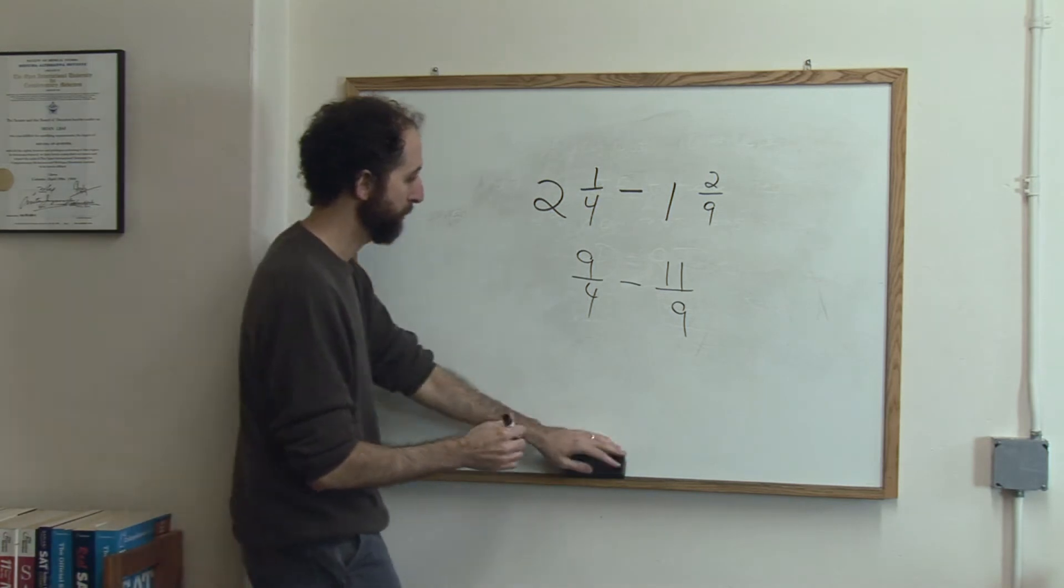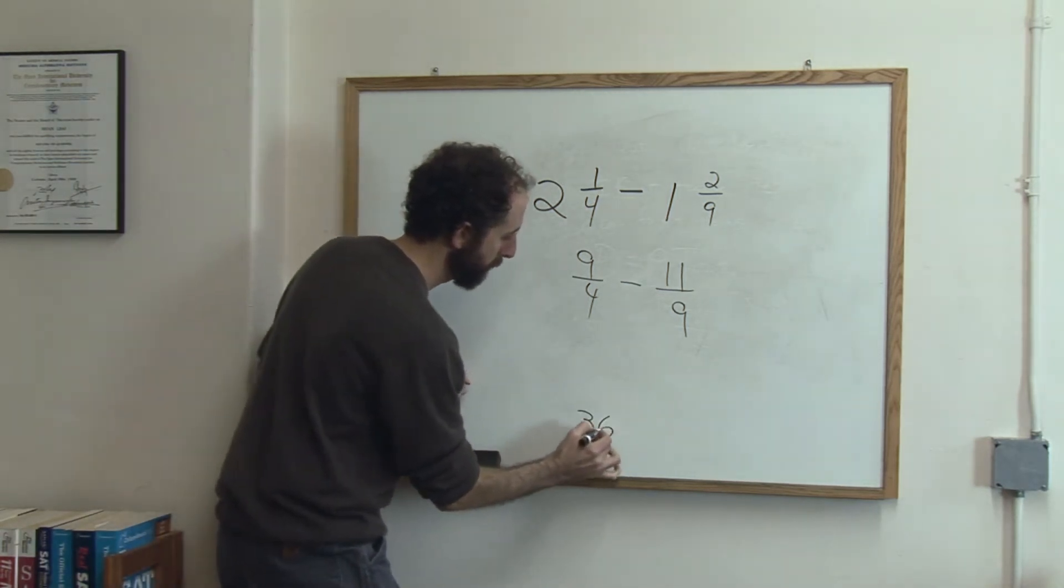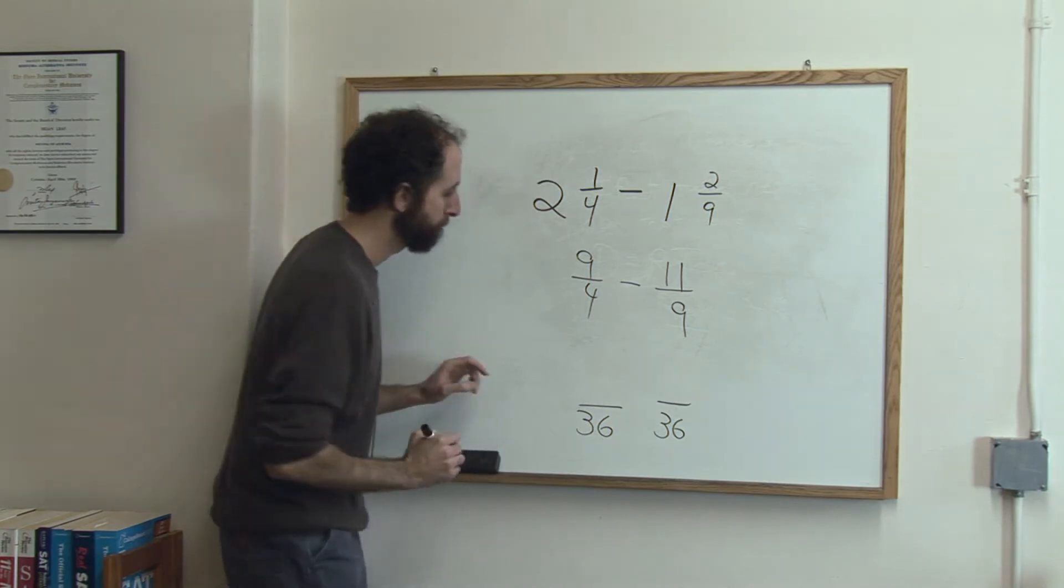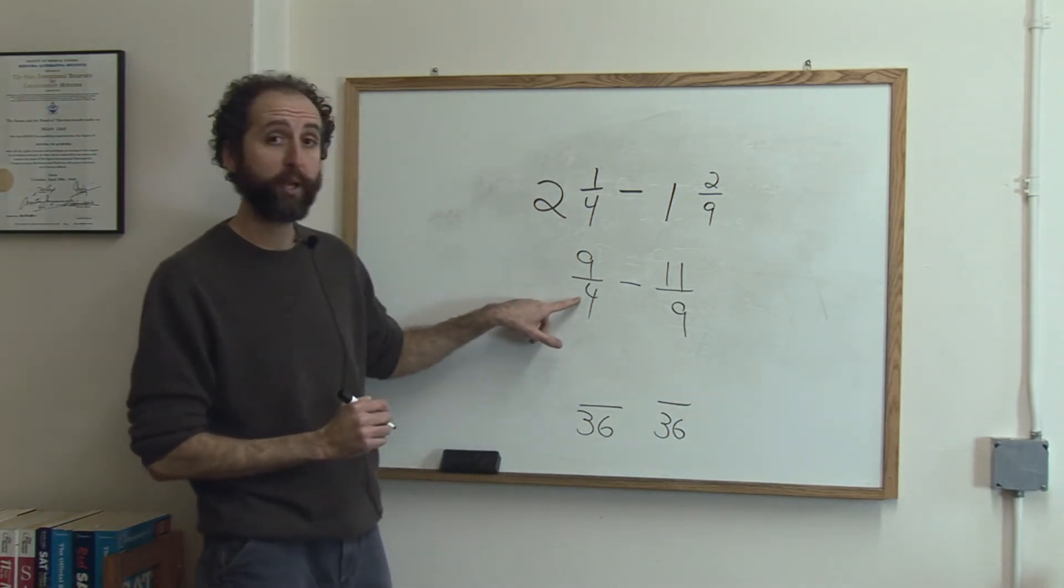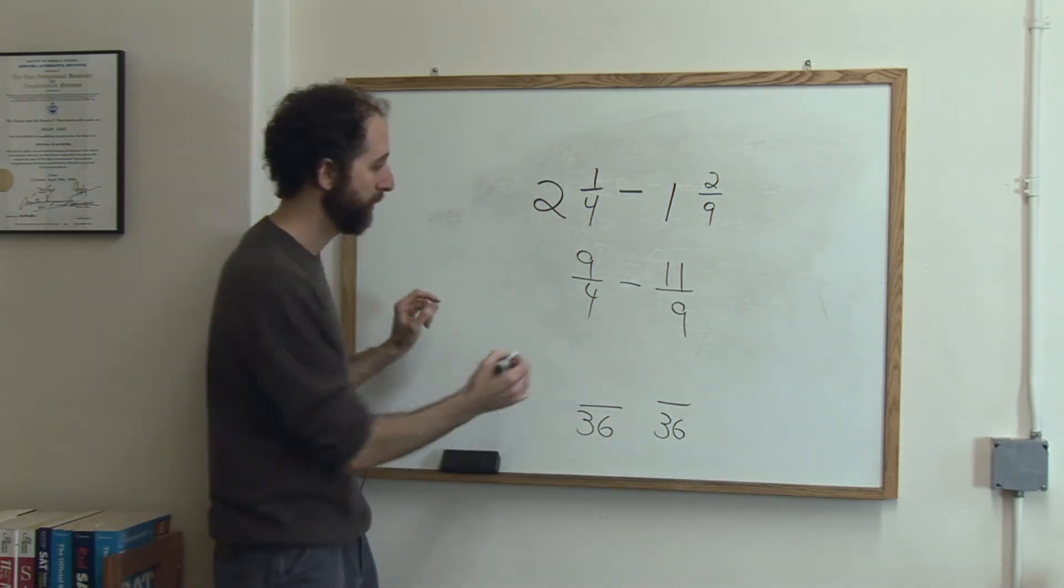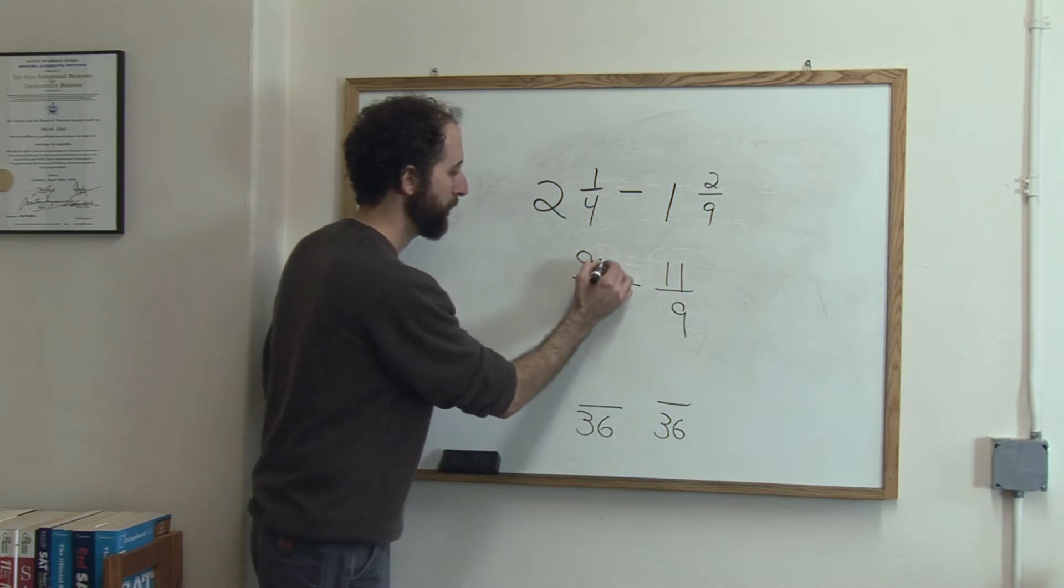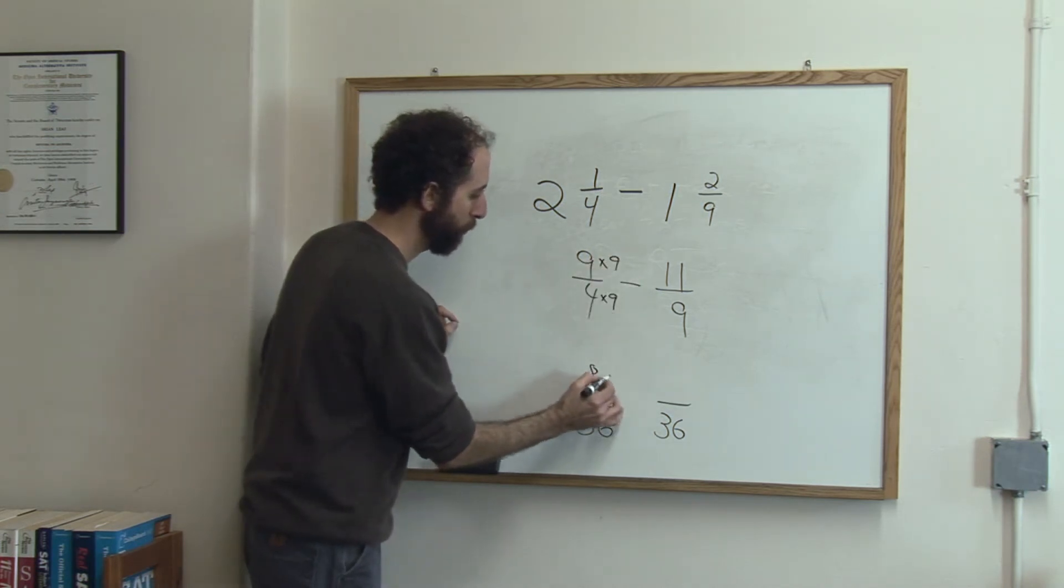The common denominator is going to be 36. So we need to say what do we need to multiply 4 by to get 36? The answer is 9, so we do the same to the top, gives me 81 over 36.